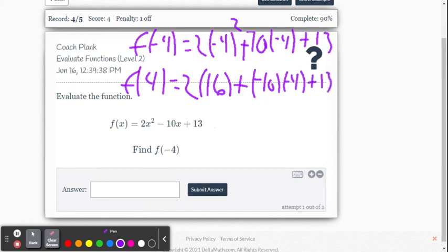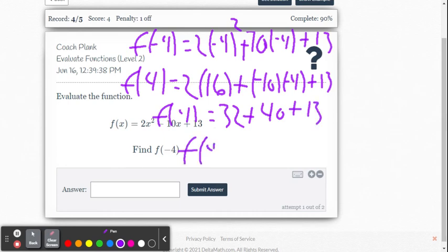So now we'll do the multiplication. So we get f of 4 equals 2 times 16 is 32 plus negative 10 times negative 4 is positive 40 plus the 13. So our answer is going to be f of negative 4. f of negative 4 equals 32 plus 40 is 72 plus 13 is 85.